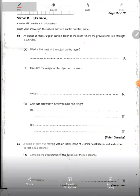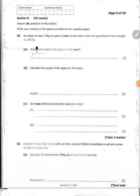So I have question B1, which says an object of mass 75 kg on Earth is taken to the moon where the gravitational field strength is 1.6. What is the mass of the object on the moon? Mass does not change. So the mass still remains 75 kg.